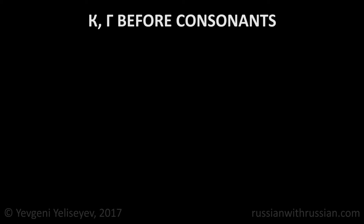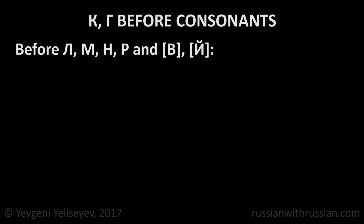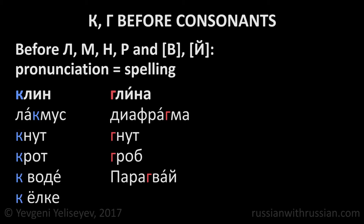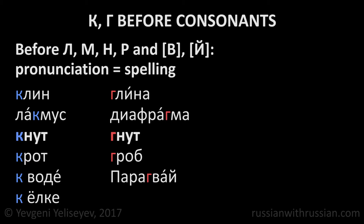But as I said in the last lesson, before the letters Л, М, Н, Р and before the sounds В and Й, the pronunciation of consonants stays the same — it's not different from the spelling. Клин, глина, лакмус, диафрагма, кнут, гнут, крот, гроб, к воде, парагвай, к елке.